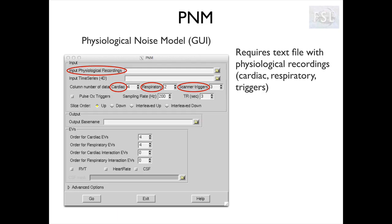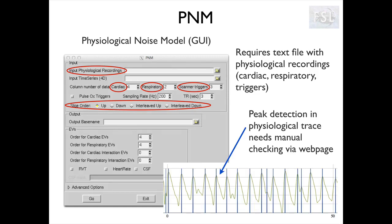Here is how to correct for physiological noise with PNM. It requires the physiological recordings as input stored in a text file. We then need to tell PNM which column contains the cardiac trace, the respiratory trace, and the scanner triggers - in this example, columns 4, 2, and 3. We also need to give PNM the slice order, so the order in which the slices are acquired during the volume, as different slices will be acquired during different phases of the cardiac and respiratory cycles. The first thing PNM does is detect the peaks of the physiological traces and show them to us in a web interface, and we need to check them and can edit them if necessary.